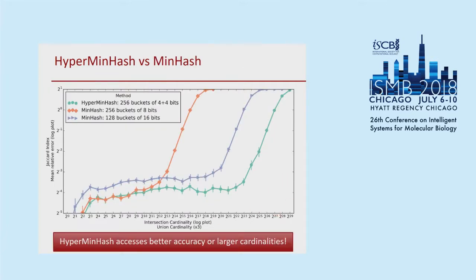This works pretty well. With a fixed-size sketch — the same amount of memory — comparing Jaccard index estimation for equal-size sets with Jaccard index of one third, the HyperMinHash sketch in green maintains accuracy up to cardinalities around 2^23 for a 256-byte sketch. The equivalent MinHash sketch with the same number of buckets starts going wrong due to accidental collision around 2^12. You can do slightly better with MinHash by decreasing buckets and increasing bits to prevent accidental hash collision, but then you're trading off error over the entire range. HyperMinHash gives better accuracy, larger cardinalities, or both.